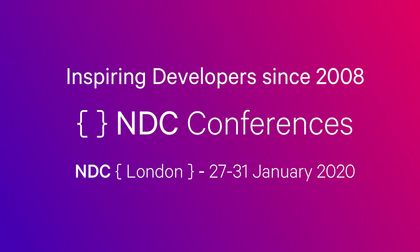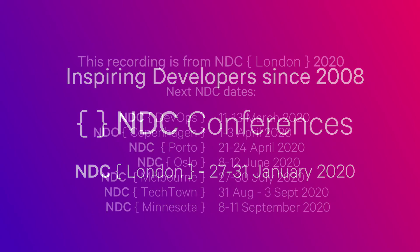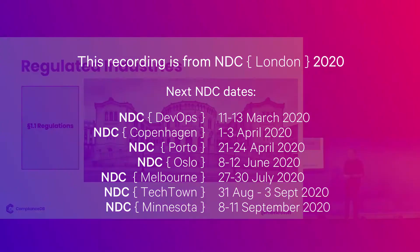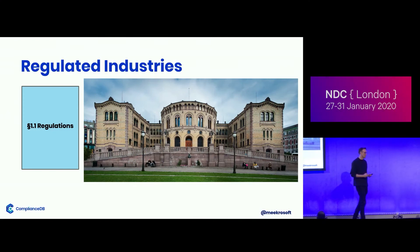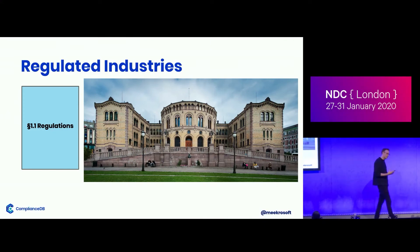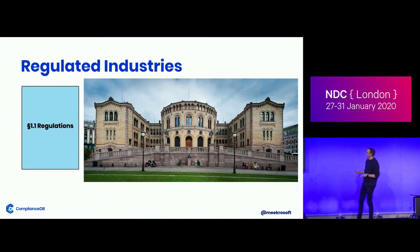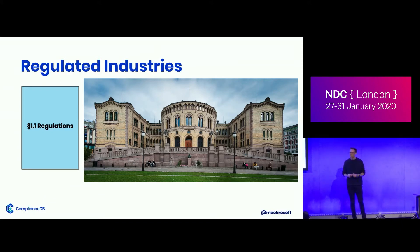Depending on what kind of organization you're in — say you're in a bank, for instance — someone like the local government will issue laws about how you can do business, about the amount of capital you must have, all kinds of things. But they also have regulations about the way you make software and how you manage IT risk. So these regulations are something you're obliged to implement in order to get your banking license.